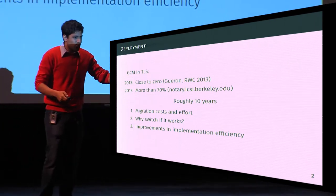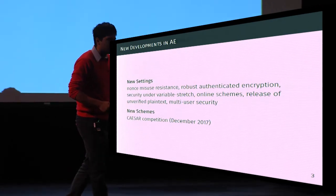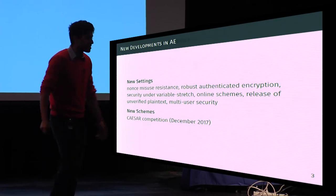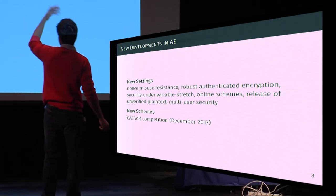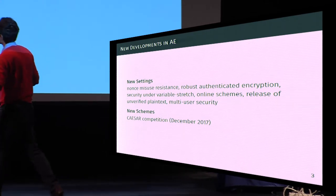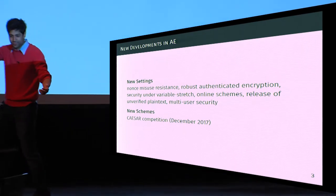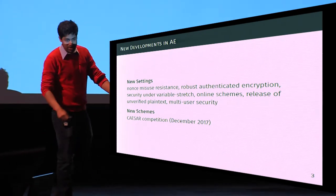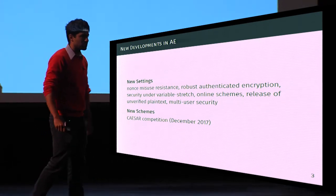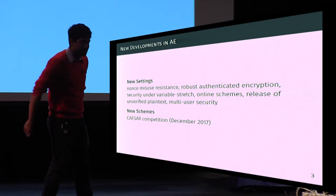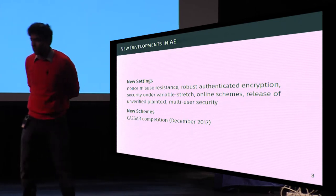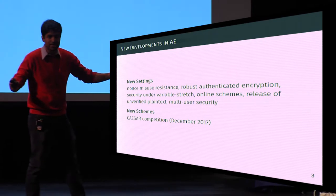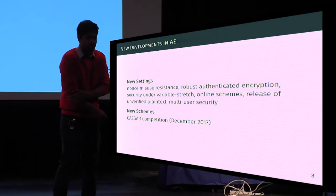This raises the question: what are we going to do with all the new settings discovered in academia for authenticated encryption? These include nonce-misuse resistance, robust authenticated encryption, security under variable stretch, online schemes, release of unverified plaintext, and multi-user security. With a CAESAR competition ending in December of this year, and given past experience, it might take 10 years or more for any of these schemes to be deployed — if at all.